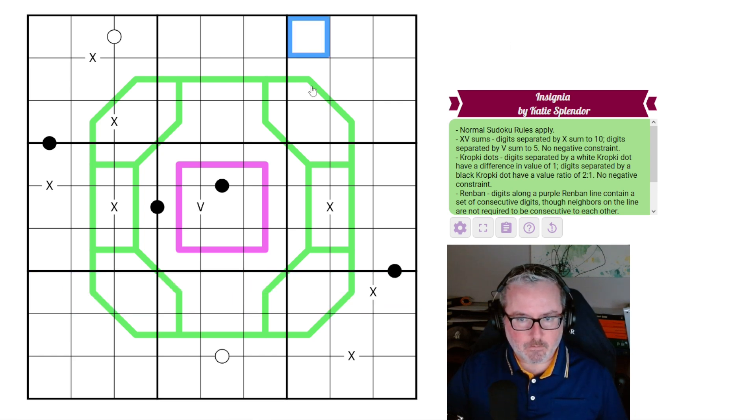So what do we got? Normal Sudoku's apply. Every row, every column, every 3x3 box contained the digits 1 through 9 once each. Then we've got XV sums, so digits separated by an X sum to 10, digits separated by a V sum to 5, no negative constraint.